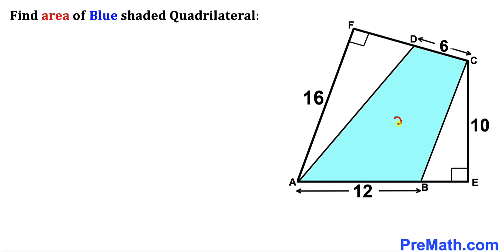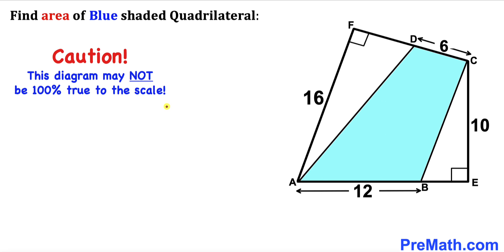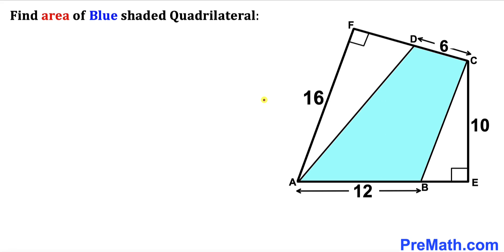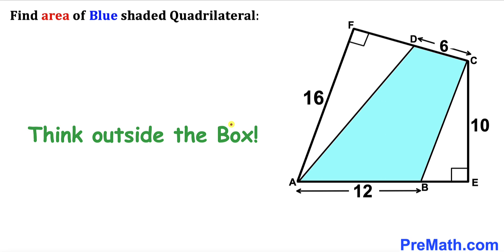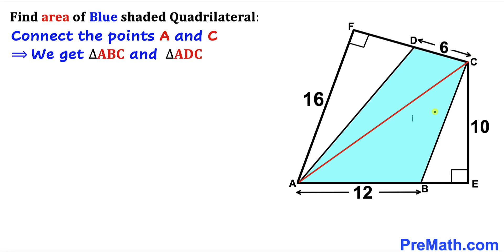We are going to calculate the area of the blue shaded quadrilateral ABCD. Please don't forget to give a thumbs up and subscribe. Note that this figure may not be 100% true to scale. Since we are dealing with this tricky kind of problem, we are going to think outside the box and connect the two opposite points A and C.